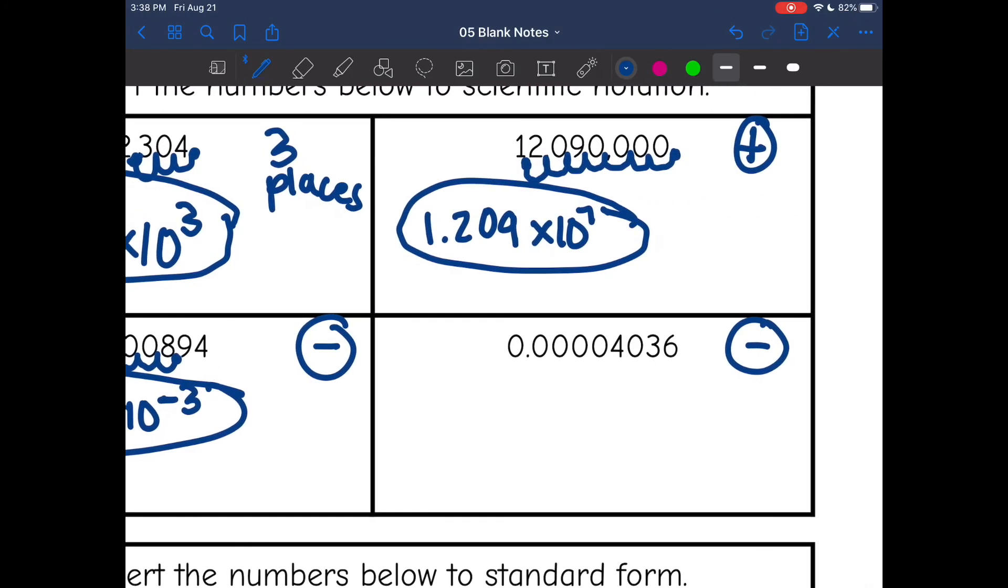Okay, next one, I need to move my decimal to make it between one and 10. So 4.036, that number is between one and 10. Always times 10, and then it's a negative exponent since it's smaller than one. And now I'm going to count how many places I moved. One, two, three, four, five.